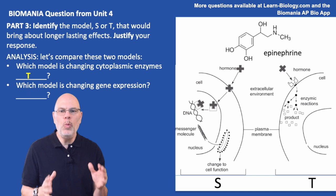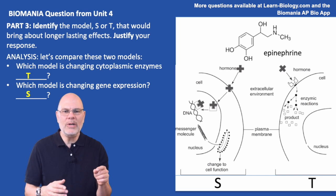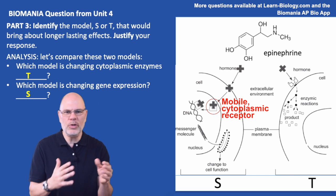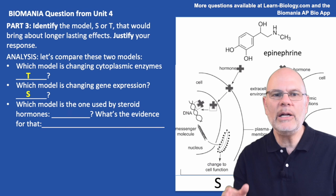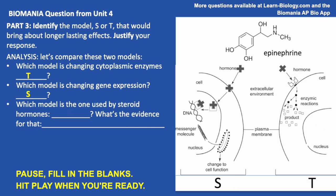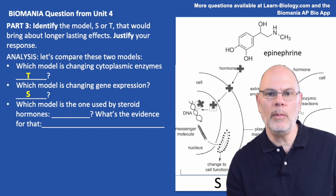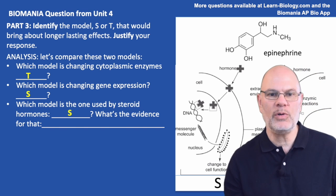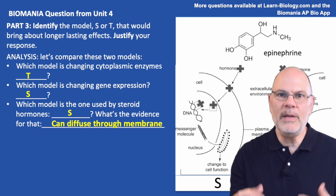Which model is changing gene expression? It's model S. The hormone actually goes through the membrane and binds with a receptor. That receptor carries the hormone-receptor complex into the nucleus, where it interacts with DNA and turns on genes. Steroid hormones are lipids — like dissolves like — so steroid hormones are able to diffuse through the membrane and enter the cytoplasm where they bind with the cytoplasmic receptor. The evidence is that this hormone is diffusing through the membrane, which is what you'd expect from a lipid steroid hormone.